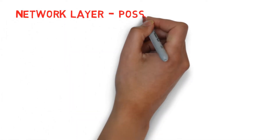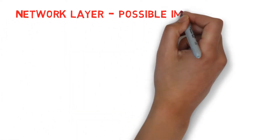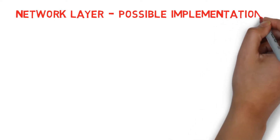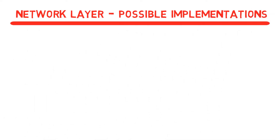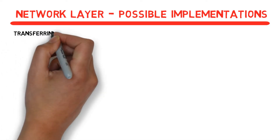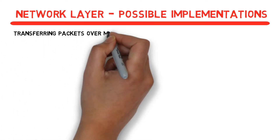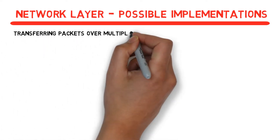In this video we'll consider possible implementations for the network layer. In the process of examining the different implementations we'll also get to know a few new terms. As we've said in the previous videos, the third layer allows transferring packets over multiple hops. How can that be achieved?